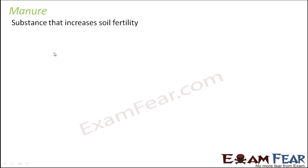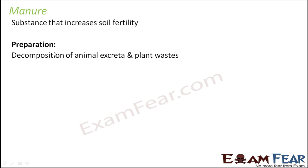Manure is a substance that increases soil fertility. Manure is prepared from decomposition of animal excreta and plant wastes — it is basically obtained from wastes of plants and animals. Till now we had been talking about how to control air and water pollution, and most plant and animal wastes give rise to pollution. If these wastes can be decomposed to make manure, which in turn helps the growth of plants, we are actually recycling plant and animal wastes. Manure increases the fertility of the soil and food production.